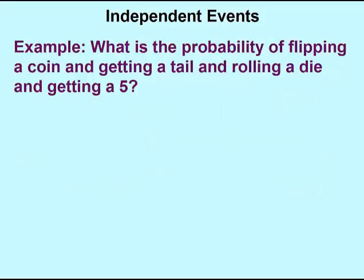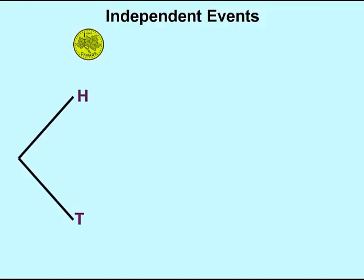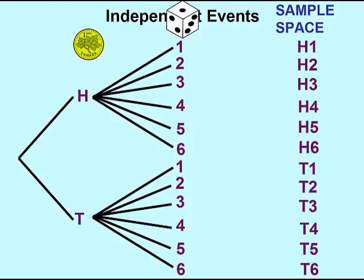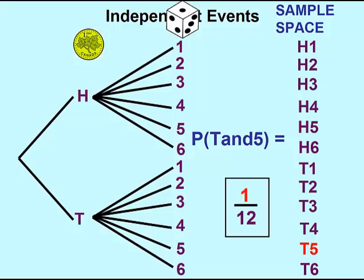Now let's try an example with different types of outcomes. What is the probability of flipping a coin, getting a tail, and then rolling a die and getting a five? Let's use our tree diagram once again to help us determine all the possible outcomes. We have our coin that would give us heads or tails, and then attached to each of these outcomes we'll have all the possibilities that go along with rolling a die — the numbers one to six — giving us a sample space of twelve possible outcomes. The probability of flipping a coin and getting tails and rolling a die and getting five would be one out of twelve possible outcomes.